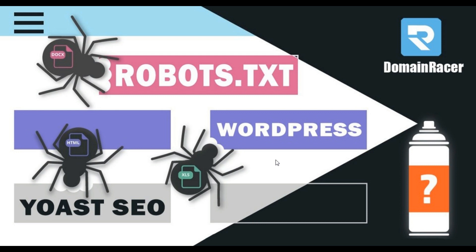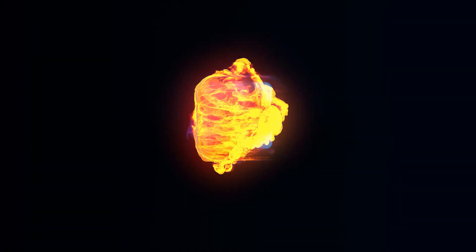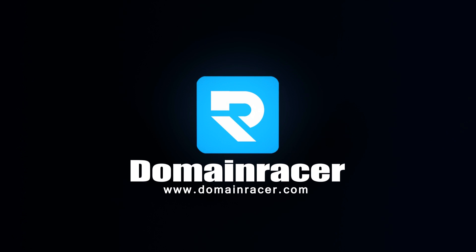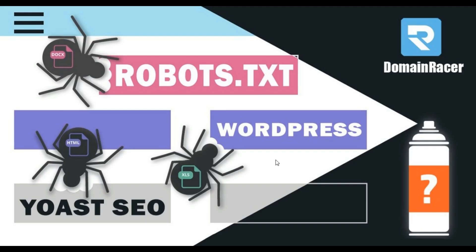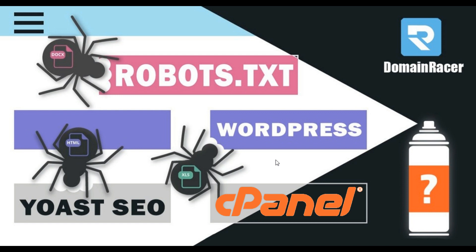Hey guys, welcome back. Bhagyashree here from domainracer.com. In today's topic I am going to explain how to create and edit a robots.txt file for WordPress. There are two ways to create a robots.txt file in WordPress, so you can choose any method that works for you. The first method is using a WordPress plugin, or second, create and edit the robots.txt file manually using cPanel.